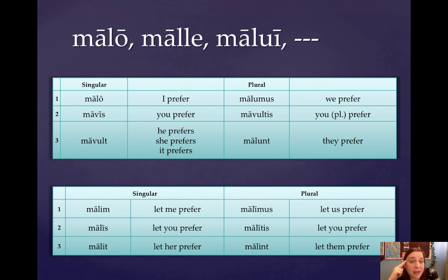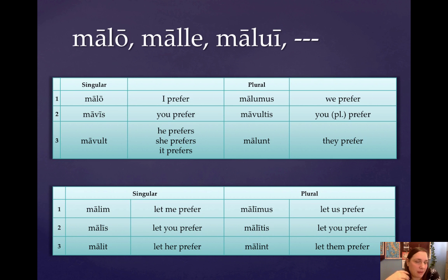And malo is going to be much of the same, except with the 'ma' in front of it. So the present active indicative: malo, mavis, mavult, malumus, mavultis, malunt. And the present active subjunctive: malim, malis, malit, malimus, malitis, malint.